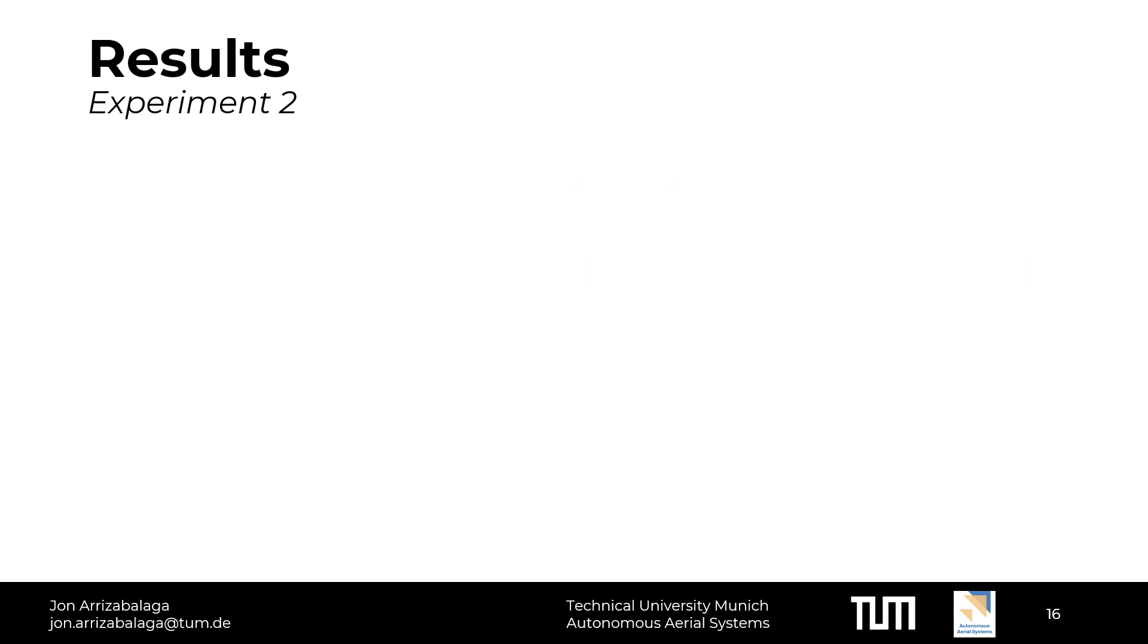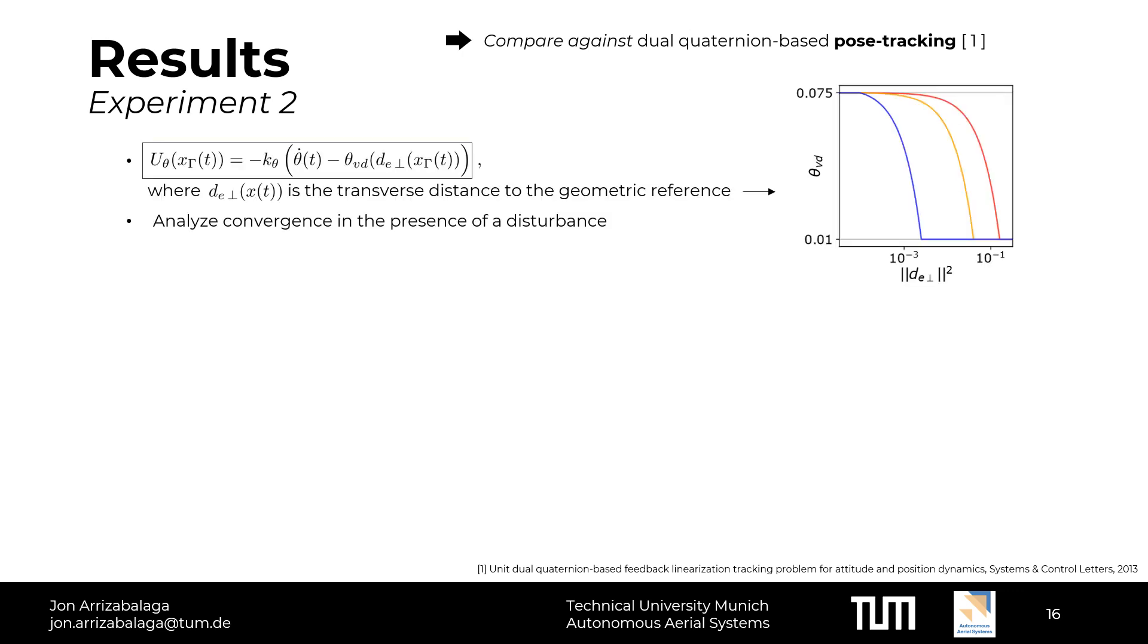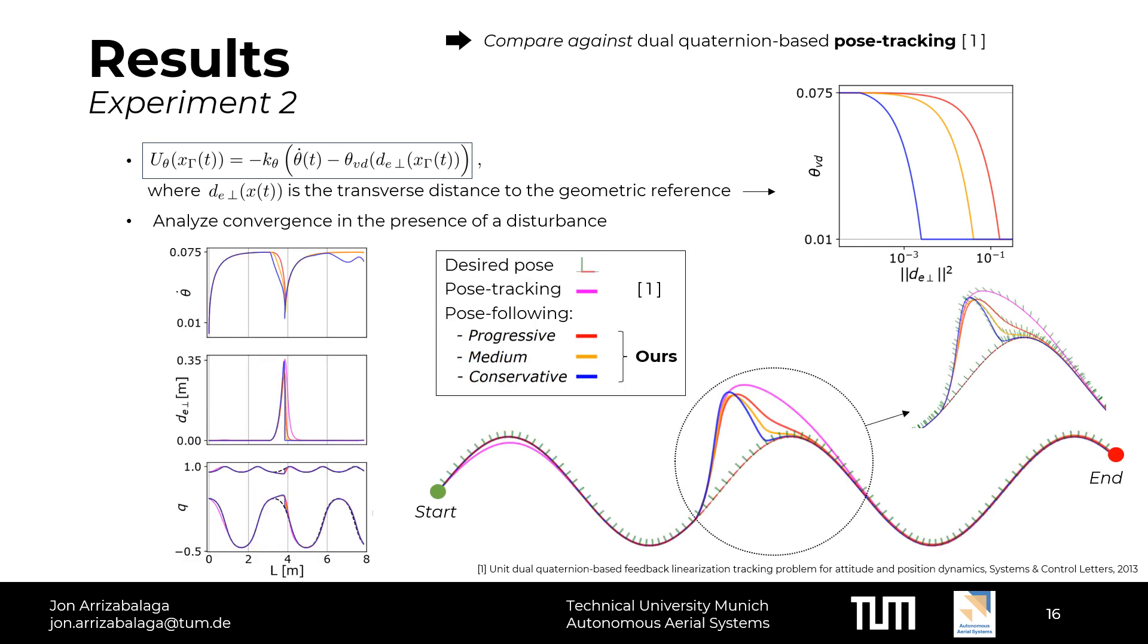In the second experiment, we compared the performance of the proposed pose-following approach against pose-tracking. To do so, the desired velocity profile function is chosen to be dependent on the distance to the geometric reference. Intuitively, if the system is far away from the reference, it slows down until it is close enough to increase the speed. This mapping is regarded as a tuning parameter that the user can tailor. In an illustrative manner, we design three variants: progressive in red, medium in orange, and conservative in blue. The computed trajectories are depicted at the bottom right part of the slide.